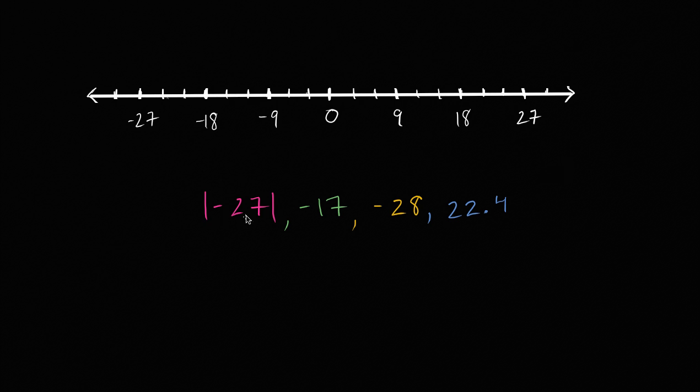So let's first think about the absolute value of negative 27. Well, it's just going to be positive 27. This is the same thing as positive 27 because negative 27 is 27 to the left of zero. So let's plot the absolute value of negative 27.